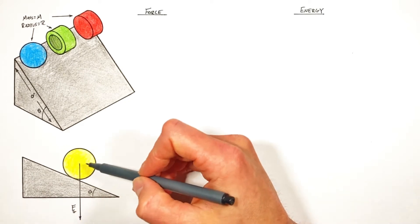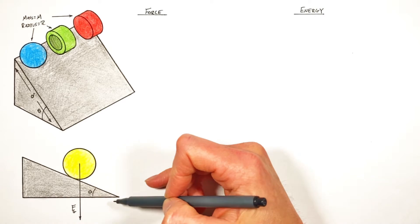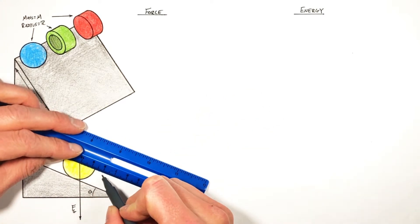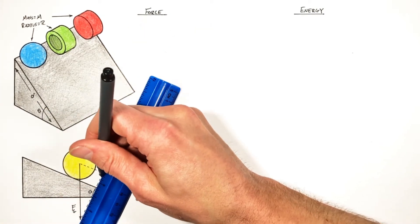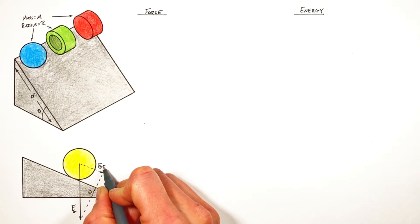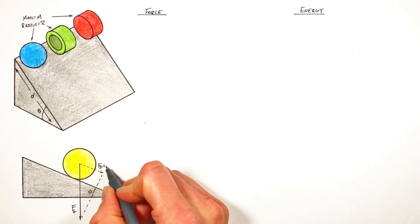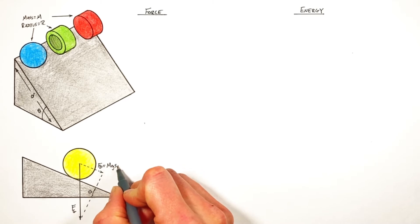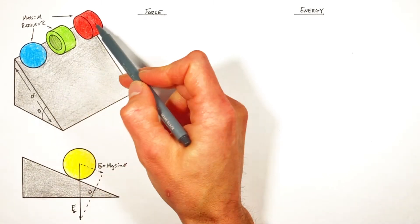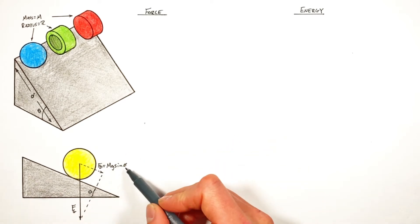And because this object is on a hill, this force by gravity has a component in the direction of the hill. We're going to call that component FD, the force down the hill. Now the force down the hill is given by mg sine theta, where m is the mass of our object, g is the acceleration due to gravity, and theta, well, that's the angle of the hill.